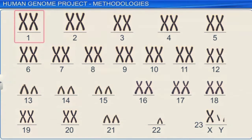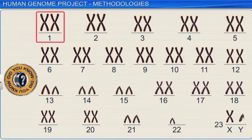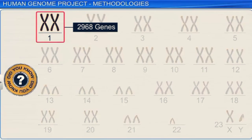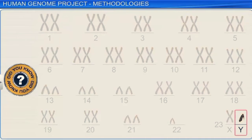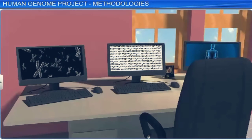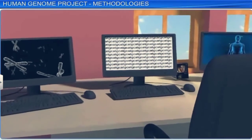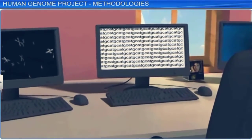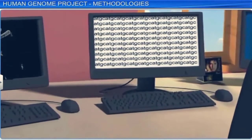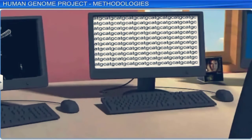Did you know that chromosome 1 has the most number of genes, that is 2,968, whereas chromosome Y has the least number of genes, only 231. These challenging tasks would not have been possible if advanced genetic engineering methodologies had not been put forth by the HGP, consequently paving the way for useful biological research.